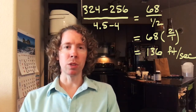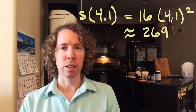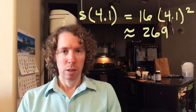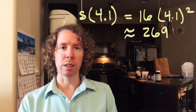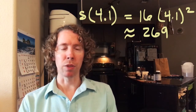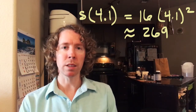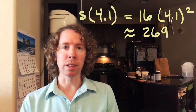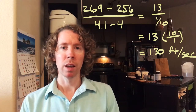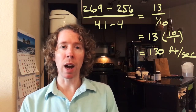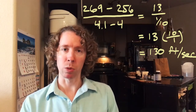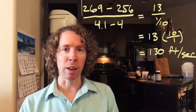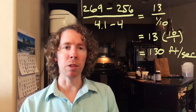Now let's do it again for a tenth of a second, so this time our time interval is even shorter — a tenth of a second. We do the distance after 4.1 seconds minus the distance after four seconds, then divide by the amount of time that's gone by, which is one tenth. That gives us another average speed.